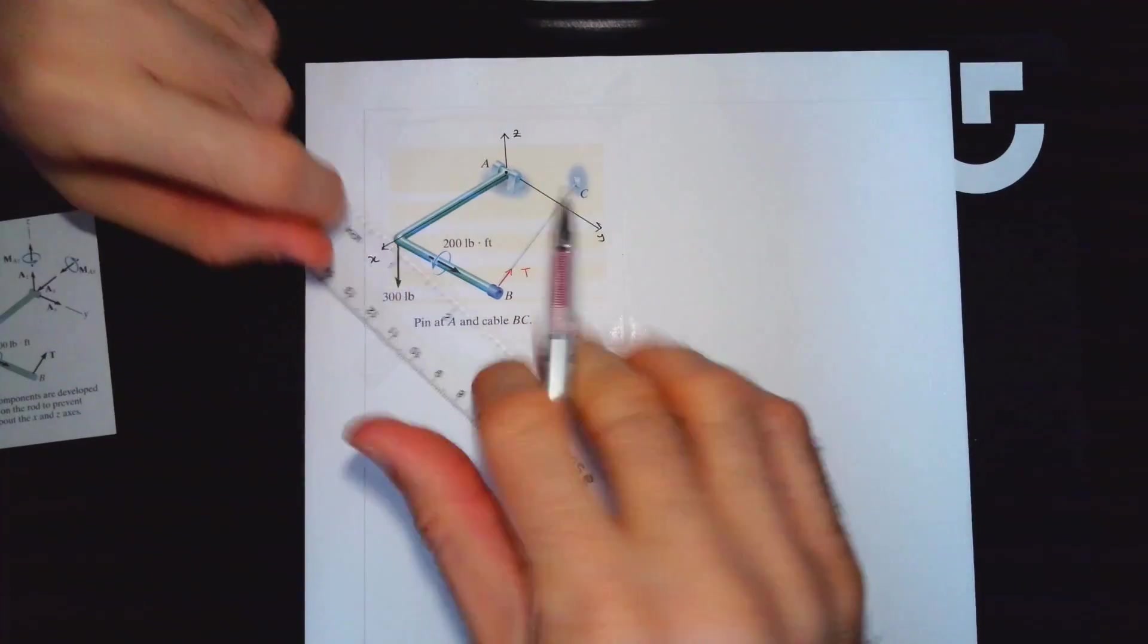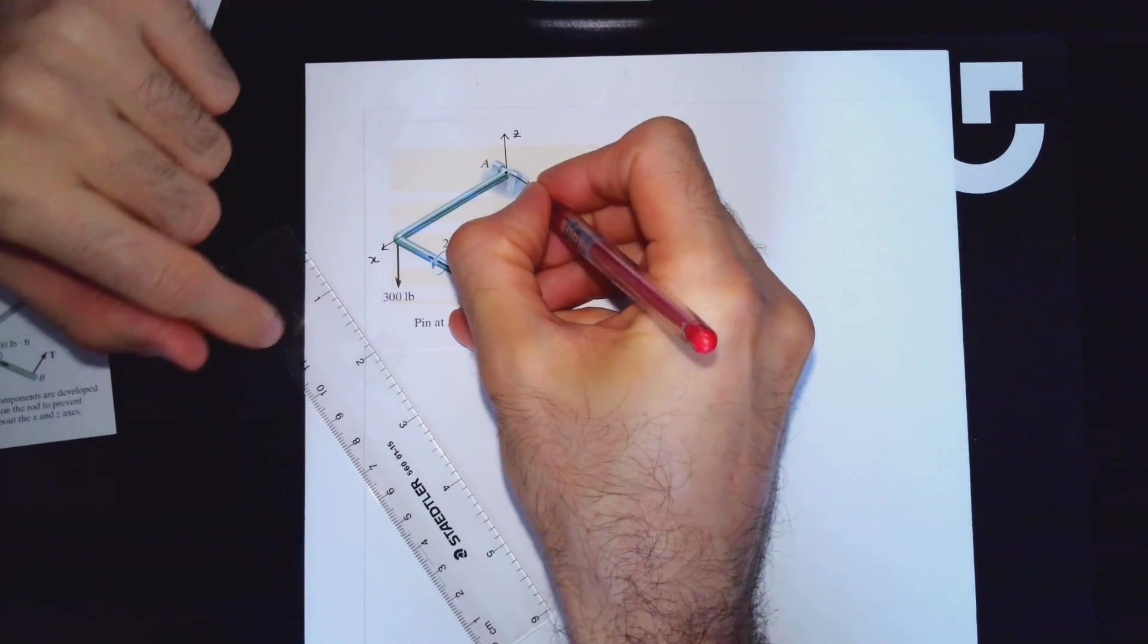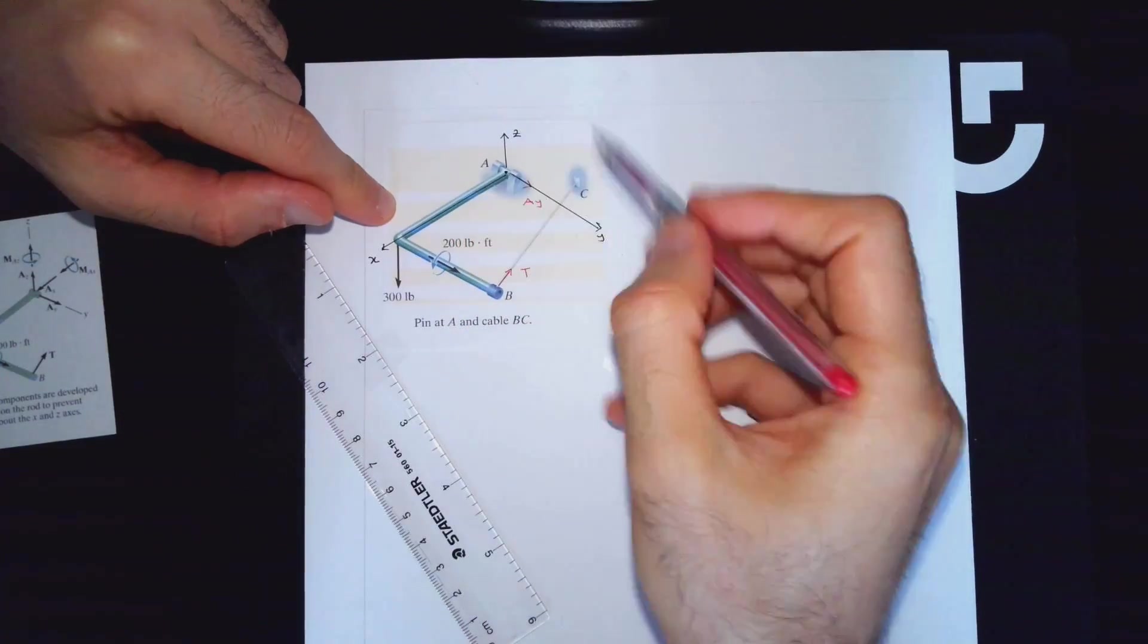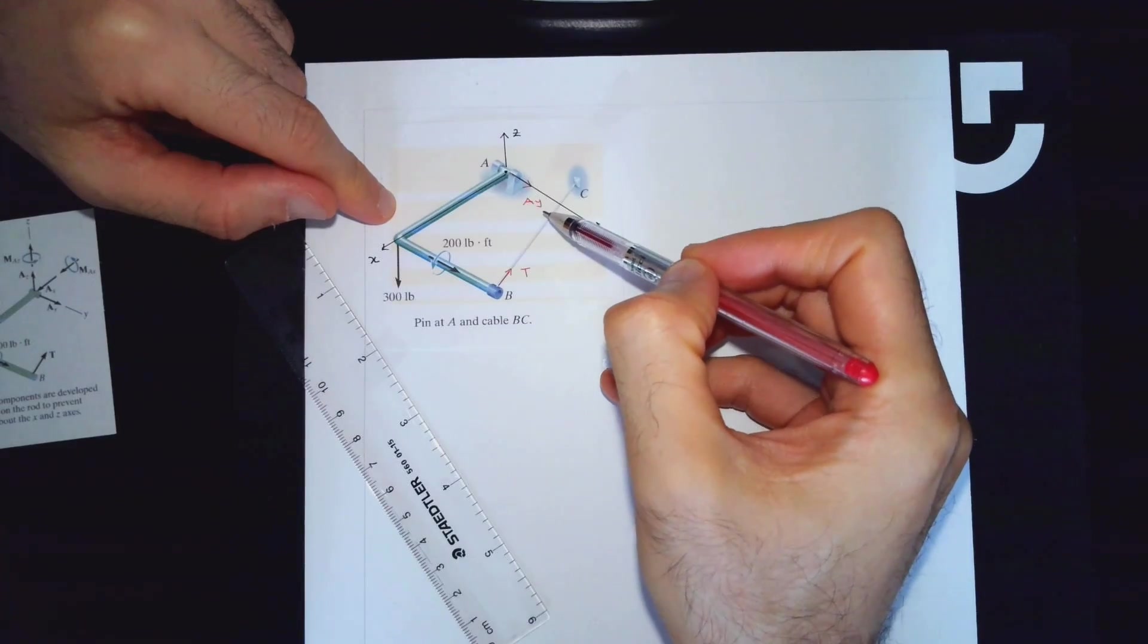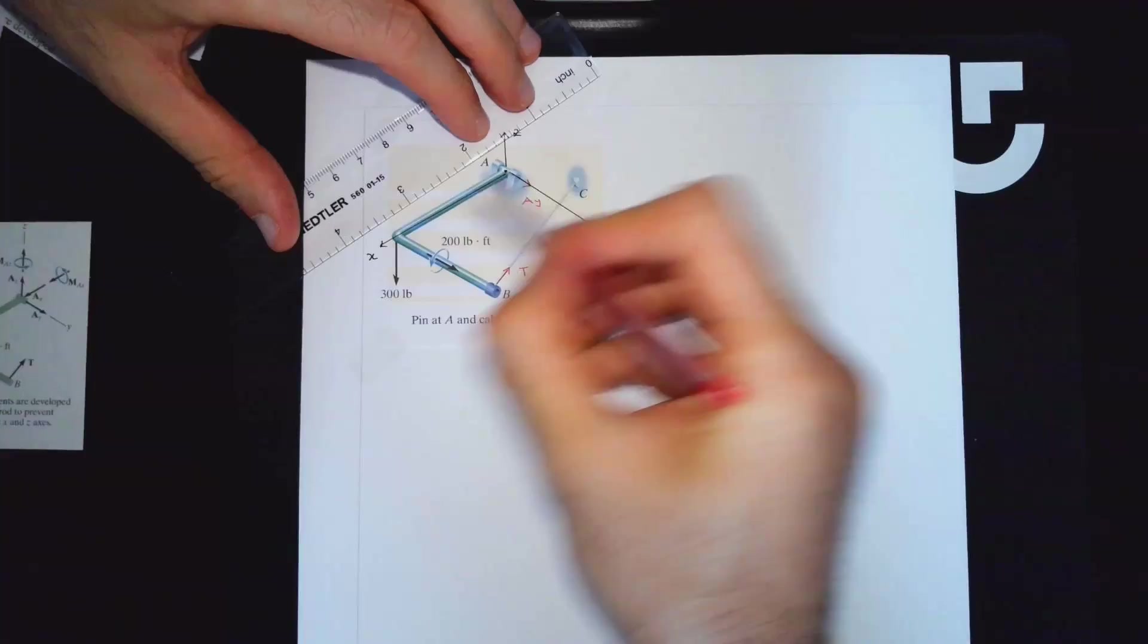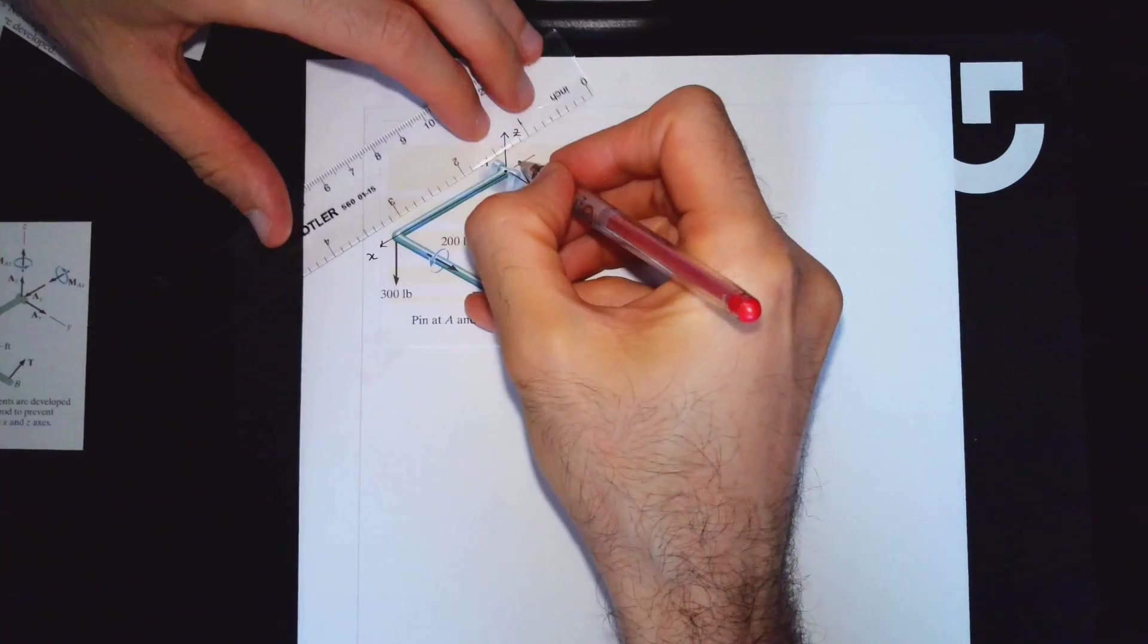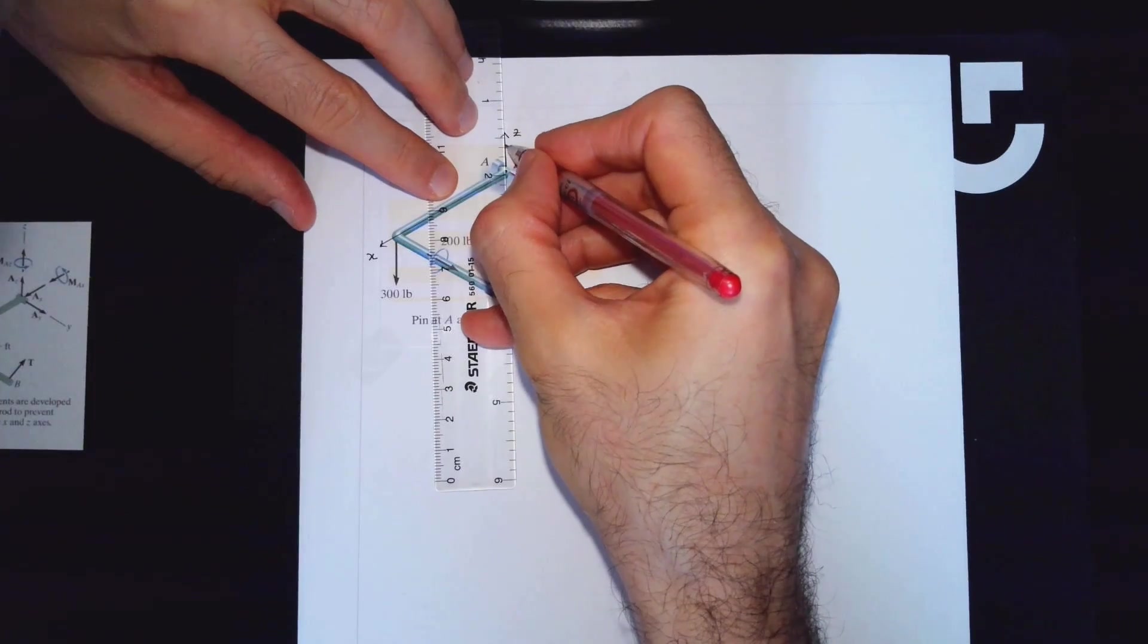Let's look at support reactions. This cannot move in Y direction, you are going to have reaction A_Y direction. This is just an assumption. You would do the calculation and at the end if it comes out to be positive, your assumed direction would be correct. If it's negative, just invert your assumption. X direction, again it cannot move. If it cannot move it's going to develop reaction. Z direction again there is going to be reaction because it cannot move.